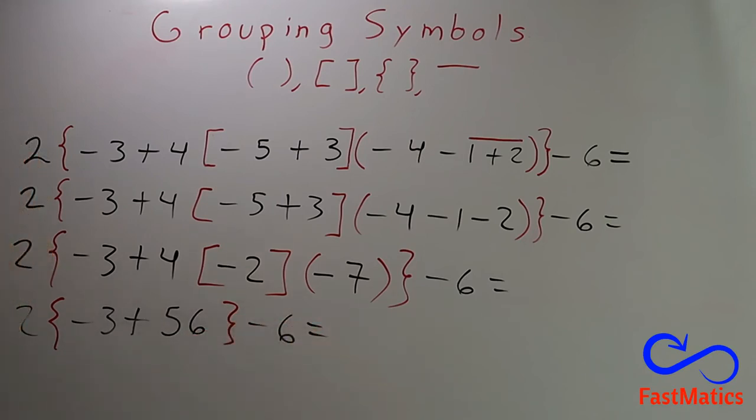And after that, we are going to solve what is inside the braces. So, we write 2. Negative 3 plus 56. 53. Because if signs are different, you subtract and keep the sign of the biggest number.